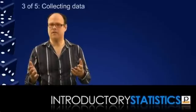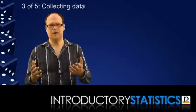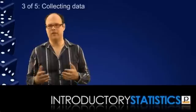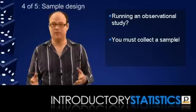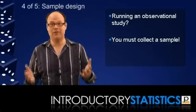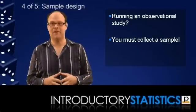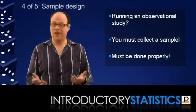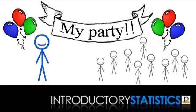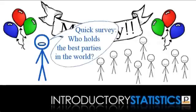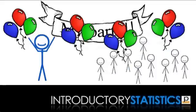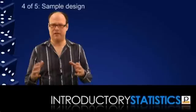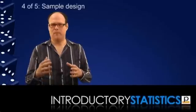And that's an advantage of experiments over observational studies, is experiments allow you to establish cause and effect relationships. If you are going to run an observational study, well the first thing you're going to have to do is actually collect a sample. You can't just go and survey your family and friends, because your family and friends probably don't represent the entire population that you're trying to explain. And when that happens in general, when the sample that you collect fails to represent the entire population, we call that bias.